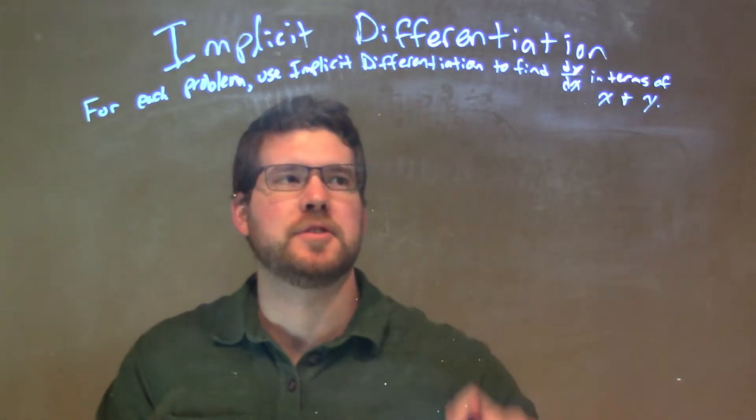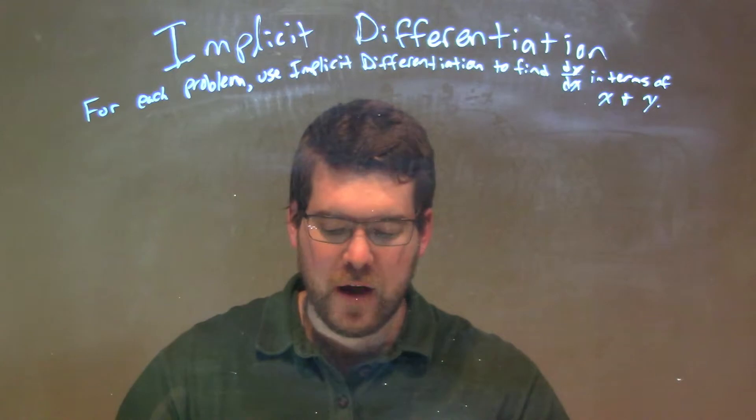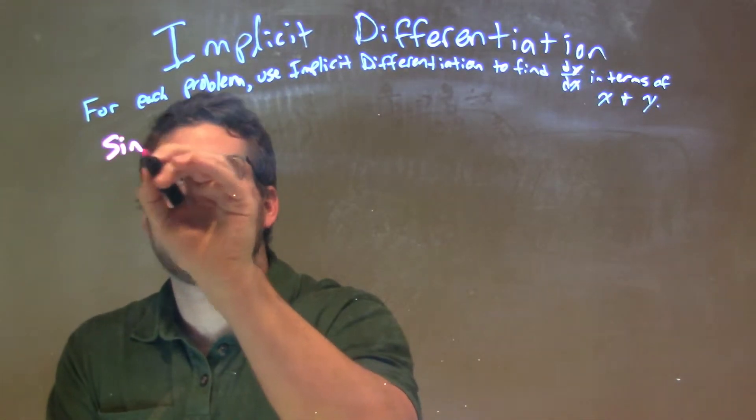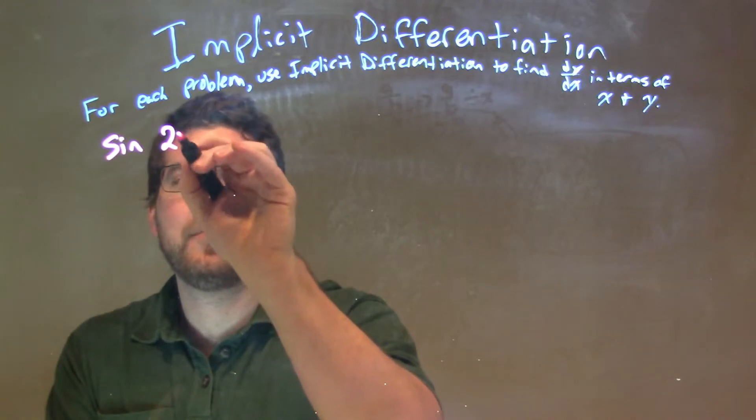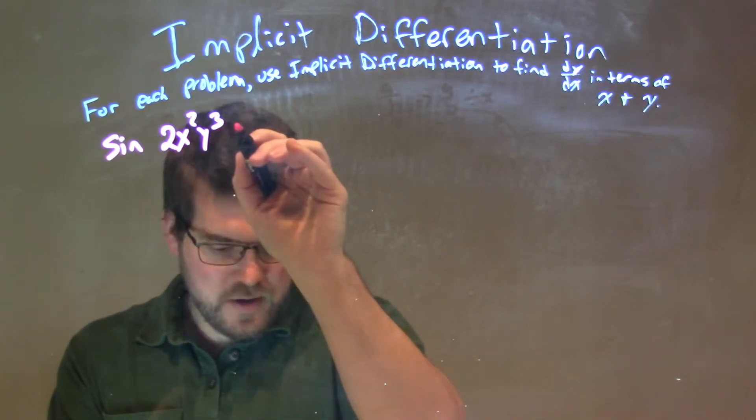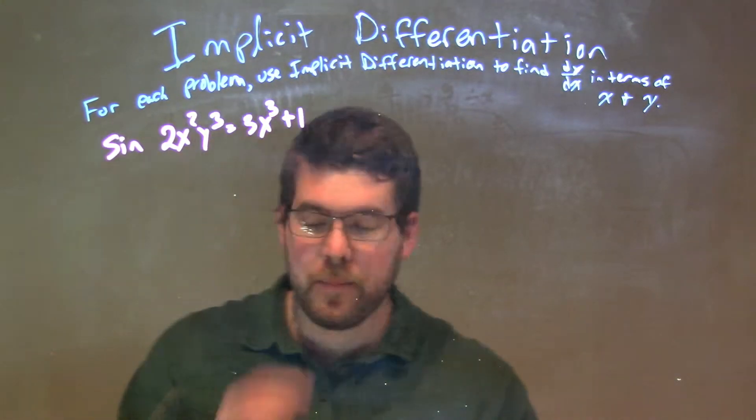For each problem, we're going to use implicit differentiation to find dy/dx in terms of x and y. If I was given this problem: sine of 2x squared y cubed equals 3x cubed plus 1.